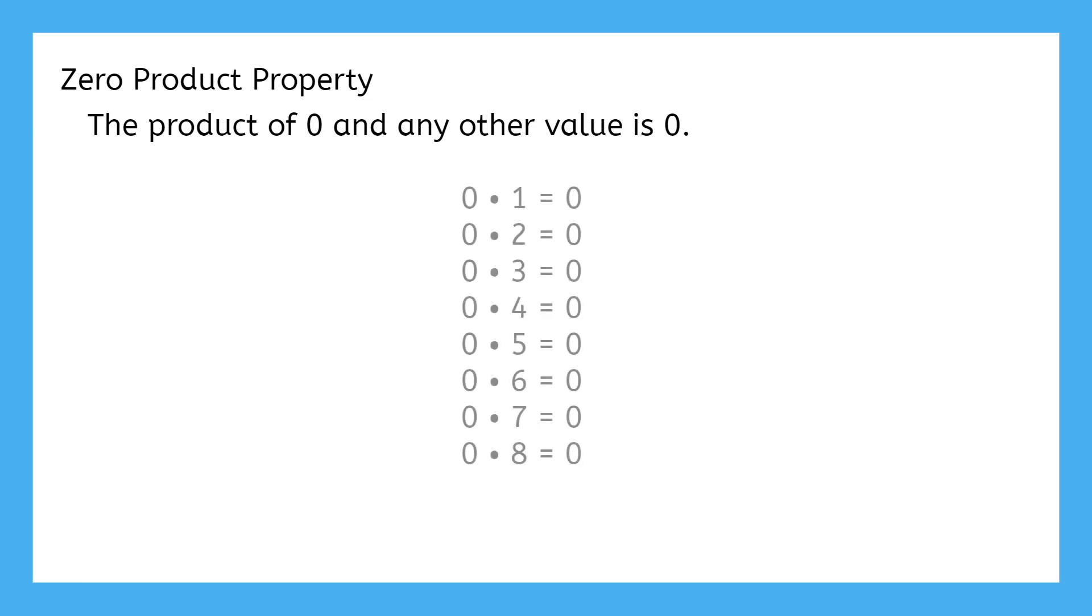You technically already know the zero product property. The zero product property states that the product of zero and any other value is always zero. Zero times any other number, zero. Zero times a variable, zero. Zero times an entire polynomial, distribute the zero, which makes each term become zero, and a bunch of zeros added together is still zero.